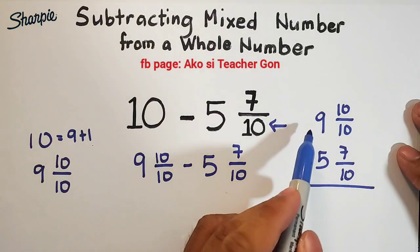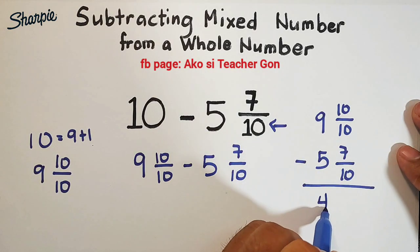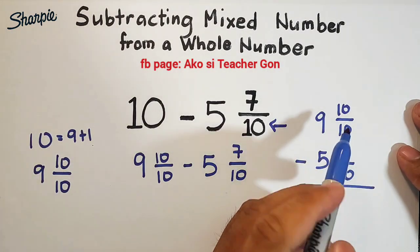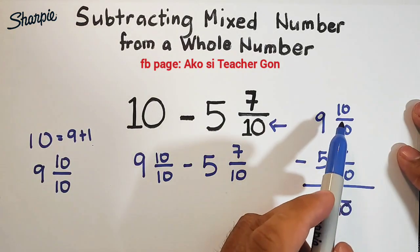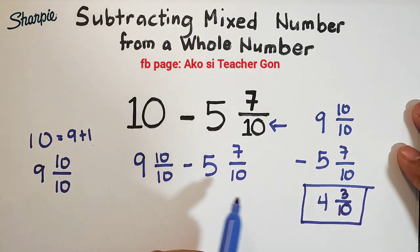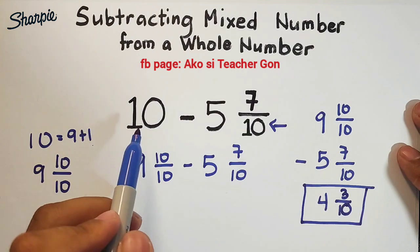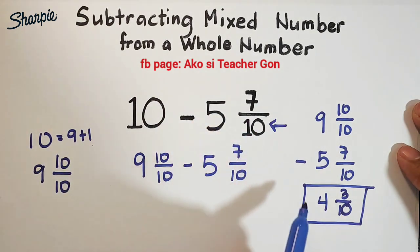9 minus 5 which is equal to 4. 4 and for the fraction, since we have the same denominator, we will copy the denominator which is equal to 10, then subtract the numerator. 10 minus 7 which is equal to 3.